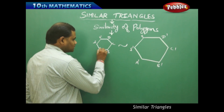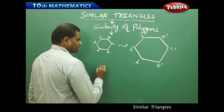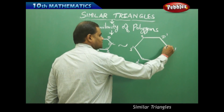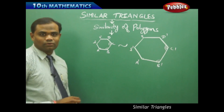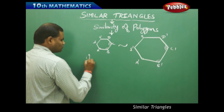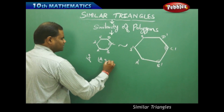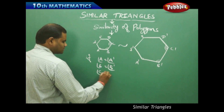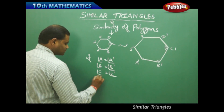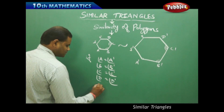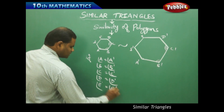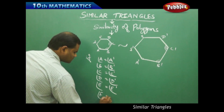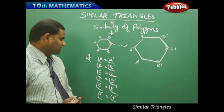For the corresponding angles: angle A must be equal to angle A dash, this equal to this, and this equal to this, and so on and so forth. Therefore, for these to be similar: angle A equals angle A dash, B equals B dash, C equals C dash, D equals D dash, E equals E dash, and finally F equals F dash.